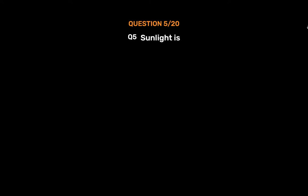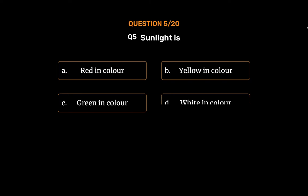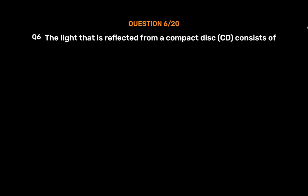Question No. 5: Sunlight is — Option A: Red in color, Option B: Yellow in color, Option C: Green in color, Option D: White in color. The correct answer is Option D: White in color.